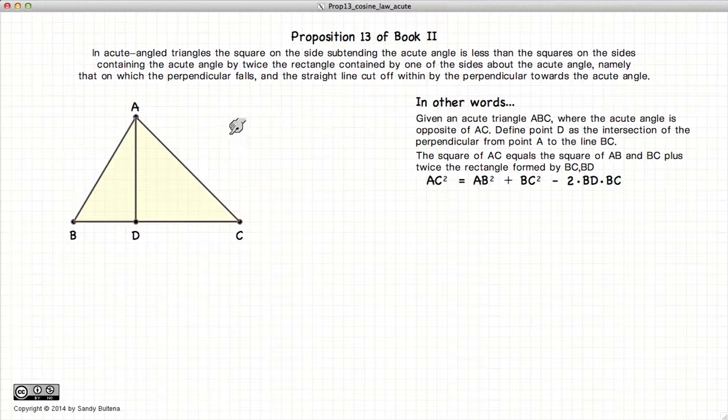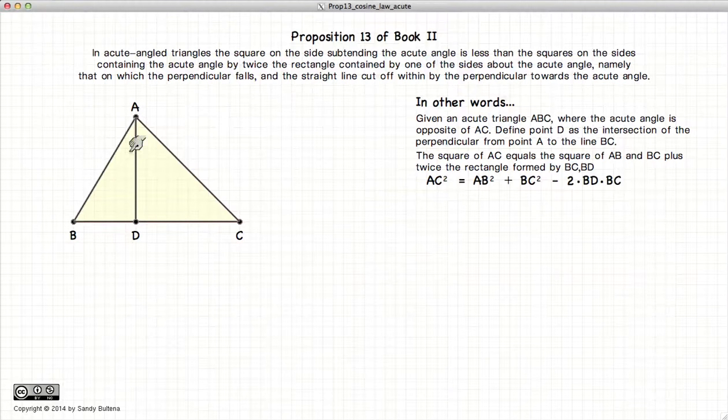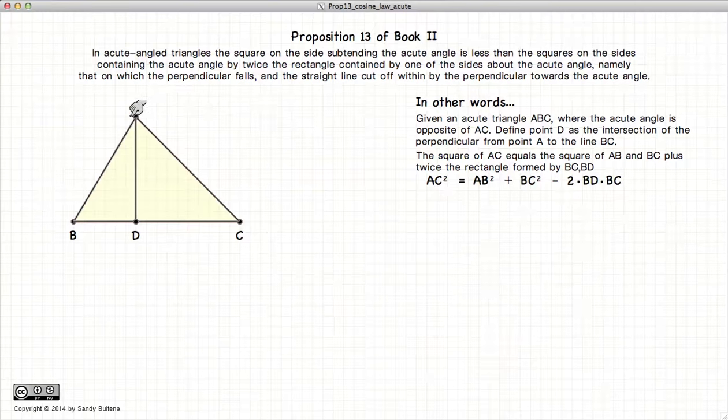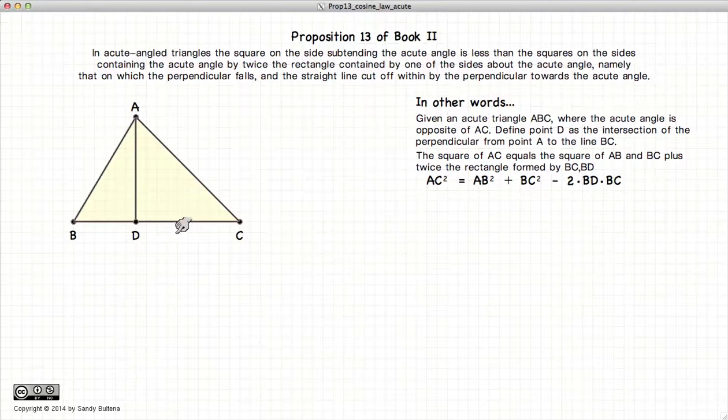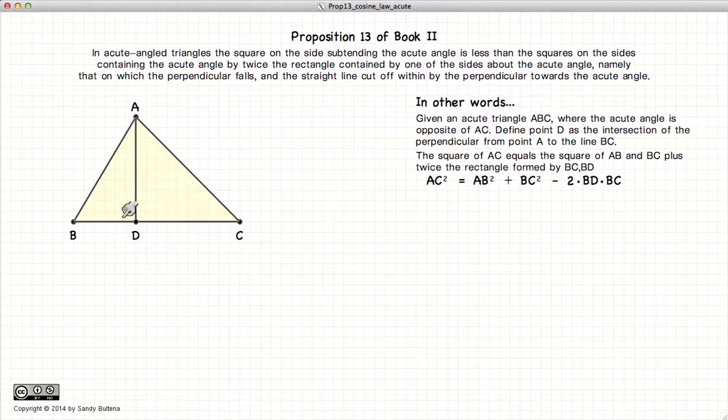Proposition 13 states that if we have an acute-angled triangle ABC, and if we define a line from A that is perpendicular to BC and intersects at point D, so here's our triangle, this line is perpendicular to that line, then AC squared will be equal to BC squared plus AB squared minus twice BD times BC.